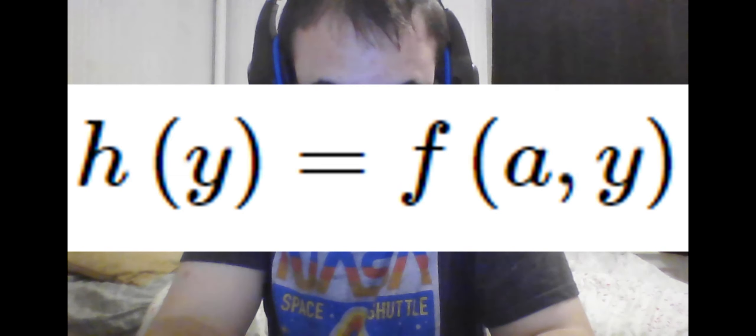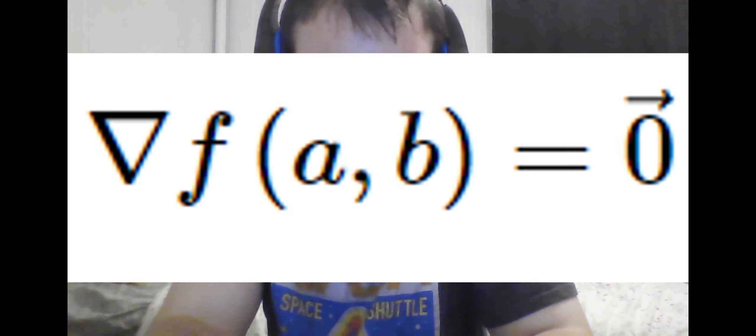So we can see, because all the partial derivatives are 0, the gradient or the vector representation of all these derivatives at once must also be 0. So we conclude that the gradient equals 0 at a relative extrema, or critical point, of a multivariable function.